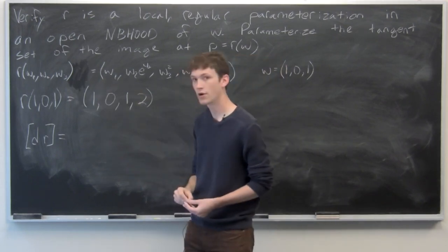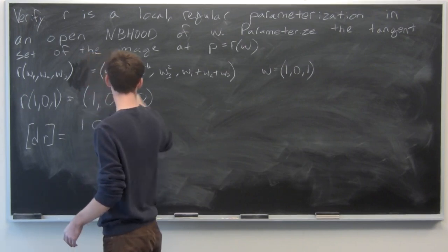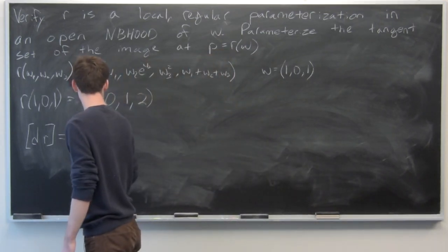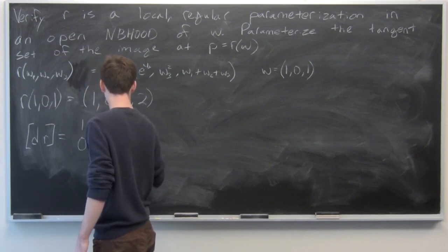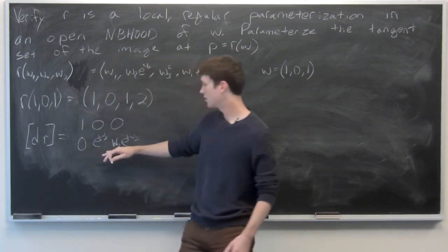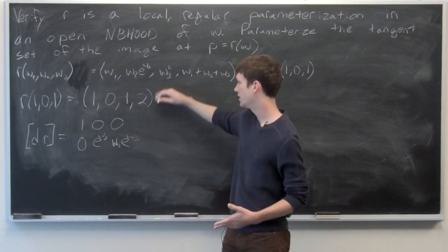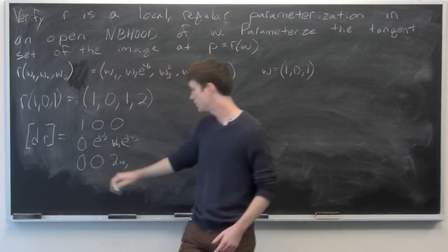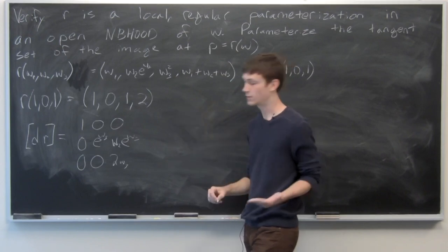So the first row will be 1, 0, 0. And the gradient of the second component is going to be 0, e to the w3, and w2 e to the w3. The third row is going to be 0, 0, 2w3, and the fourth row is going to just be 1, 1, 1.